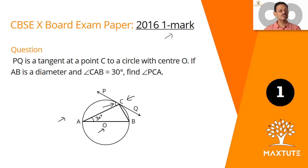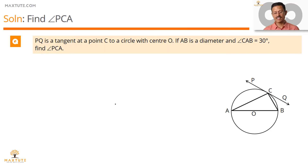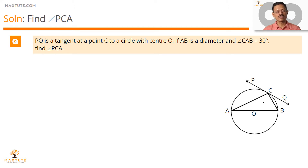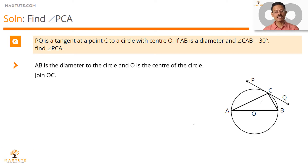Solving this question is a two-step process and involves two properties. In the first step, I'm going to join OC. O is the center of the circle and C is a point on the circumference, so OC is a radius of the circle.